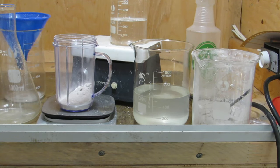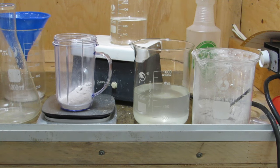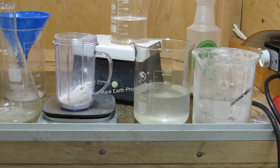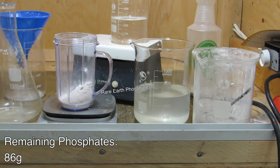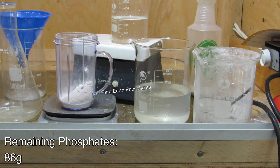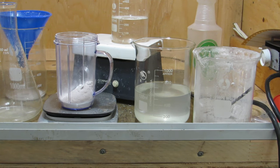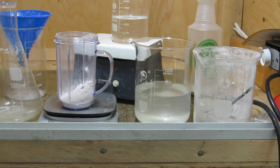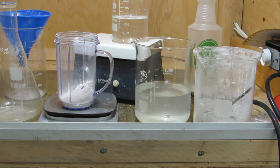The rare earth phosphates were then rinsed off the filter into a beaker, and boiled dry to determine how much yttrium dissolved into solution. After boiling dry, the phosphates weighed 86 grams, indicating that there was 15 grams of yttrium and europium oxide present in the phosphor mixture. The acid dissolution step was repeated again, but no more material dissolved, so all of the europium and yttrium was removed during the first acid addition.